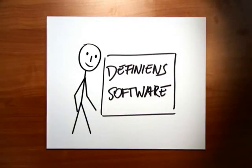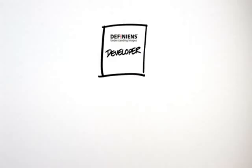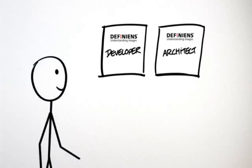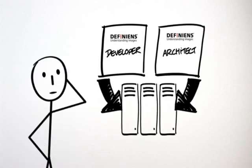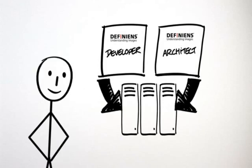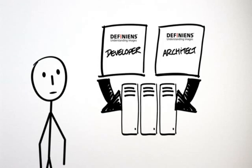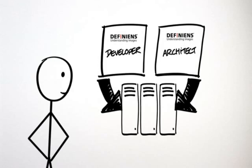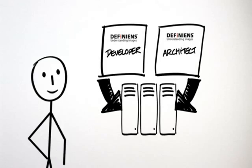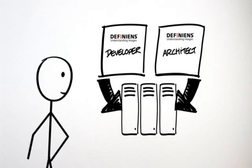Definiens software offers a software suite that enables comprehensive object-based image analysis. Definiens Developer is a solution that facilitates development of rule sets for image analysis. Definiens Architect is built for subject matter experts, applying a much simpler user interface that enables existing rule sets to be adapted to new image data. Both applications can be used as stand-alones or in combination with Definiens eCognition Server, a software component built for larger-scale image analysis environments.